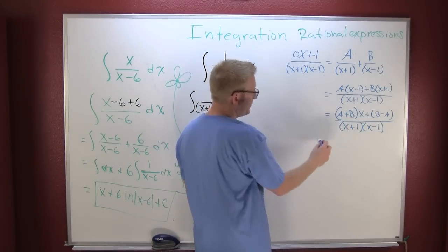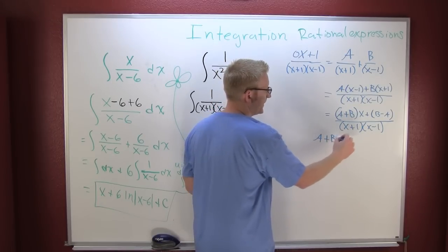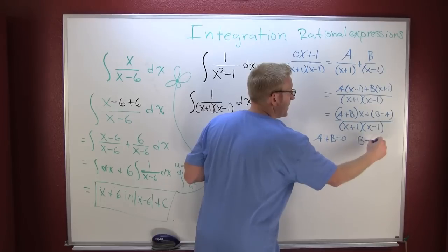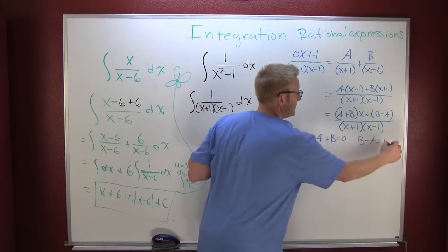And then that says A plus B is equal to zero, the coefficients on the x. And B minus A is equal to one.